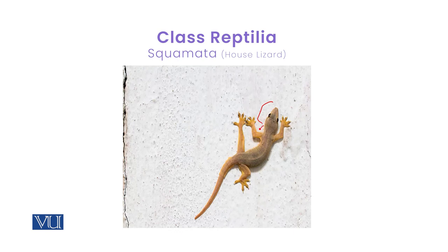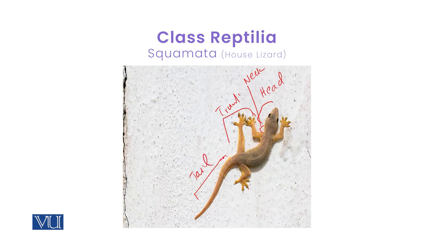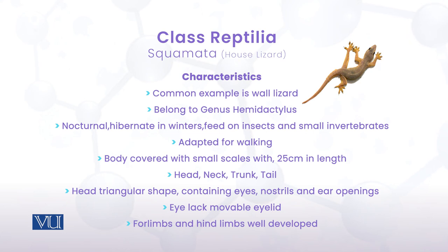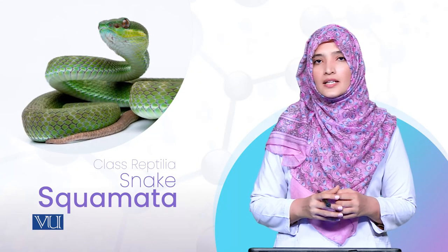Body چار parts میں ہے: head، neck، trunk، اور tail۔ Head triangular shaped ہوتی ہے جس پر pair of eyes، nostrils اور ear openings ہیں۔ Eyes movable eyelid سے cover نہیں ہوتیں۔ Fore limbs اور hind limbs well developed ہیں — tetrapod ہونے کی وجہ سے یہ آرام سے crawl یا creep کر کے ایک جگہ سے دوسری جگہ walk کر سکتی ہیں۔ Claws adhesive ہوتے ہیں جس کی وجہ سے یہ walls پر آرام سے walk کر سکتی ہیں۔